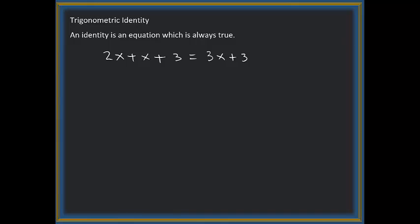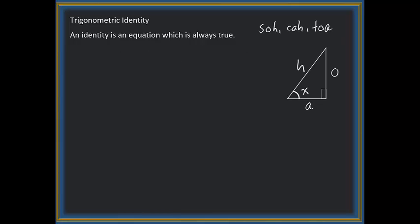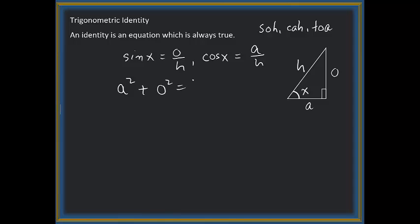Now we will talk about trig identities. We consider a right triangle where the hypotenuse is h, the adjacent is a, and the opposite is o with respect to the reference angle x. From the SOH-CAH-TOA definition, sin x = o/h and cosine x = a/h. From the Pythagorean theorem, a² + o² = h².